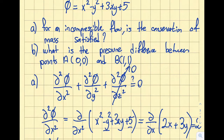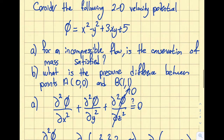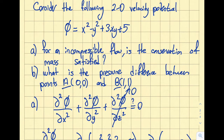For Part B, we need the pressure difference between two points. We have two options: Euler's equation or Bernoulli's equation. The question is whether A and B are on a streamline. One condition for Bernoulli's equation to be used between any two points is that the flow must be irrotational. Since we were given a velocity potential function, the flow is automatically irrotational, so we can use Bernoulli's equation between these two points.